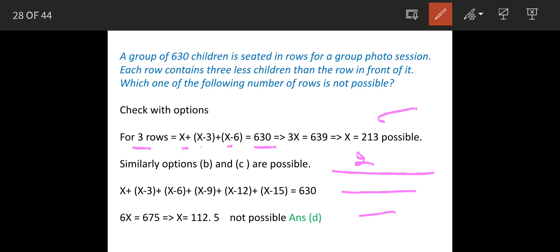That means first row will have 213 children, then second one will have 210 and next one will have 207. So this arrangement is possible because there are no decimals. Same way, if you check, option b and c are also possible.